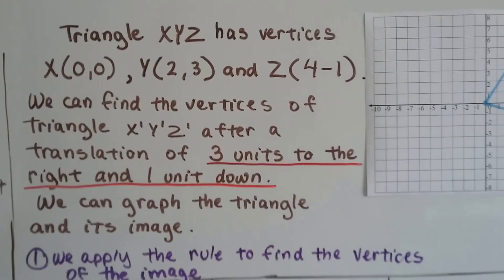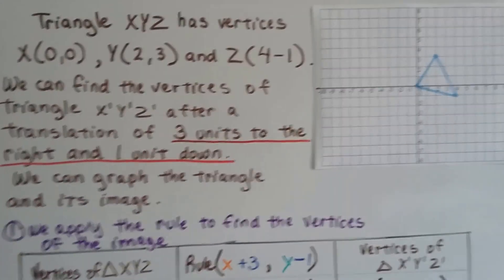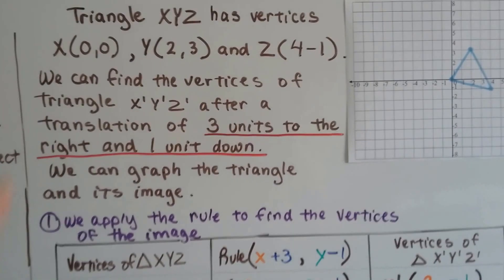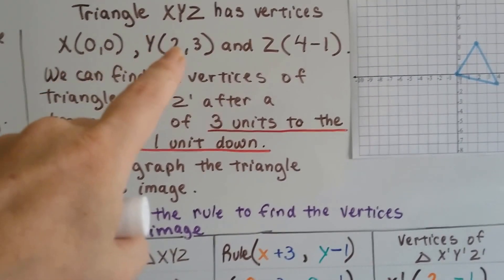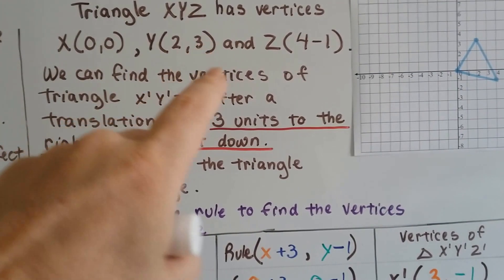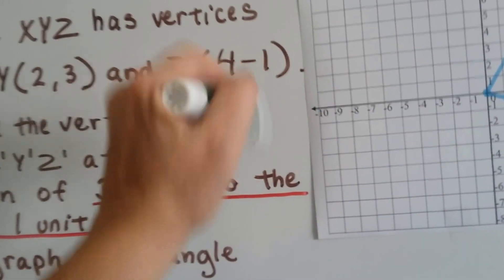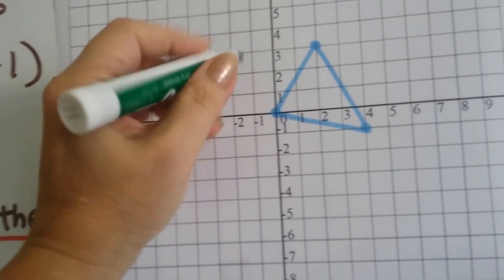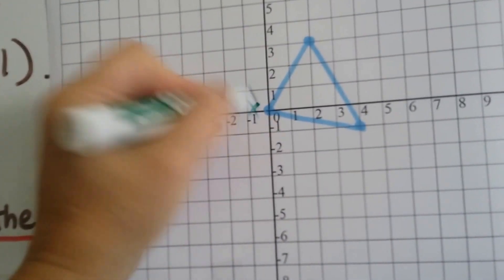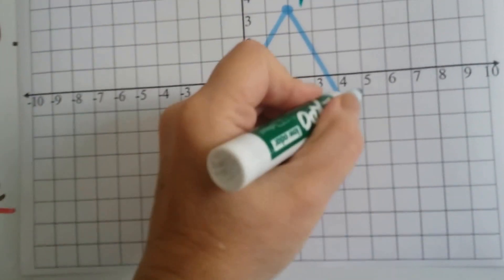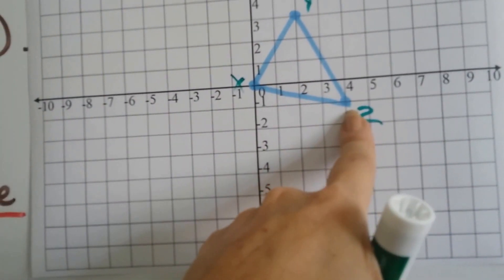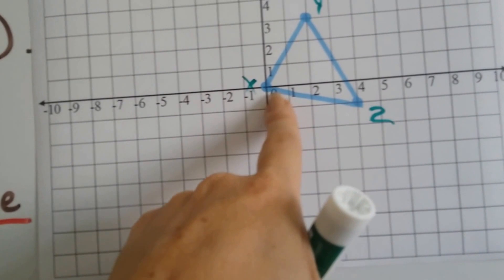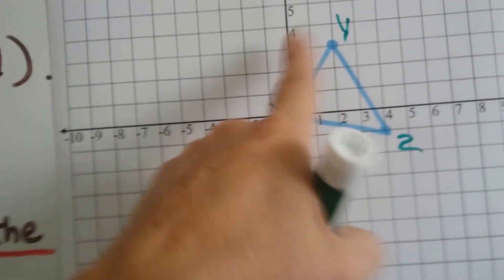So we have triangle XYZ right here. And it has vertices of X is at 0, 0 at the origin. Y is at 2, 3, which is X, Y. And Z is at 4, negative 1. So here's our labels right here. We have X, we have Y, and we have Z right here. That's the 4, negative 1. That's at the origin. This is at 2, 3.